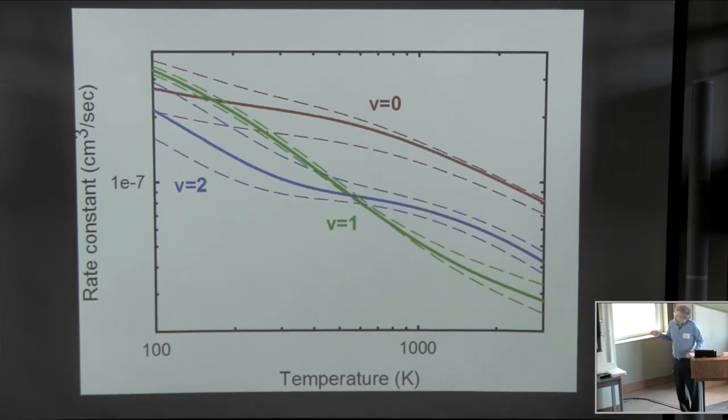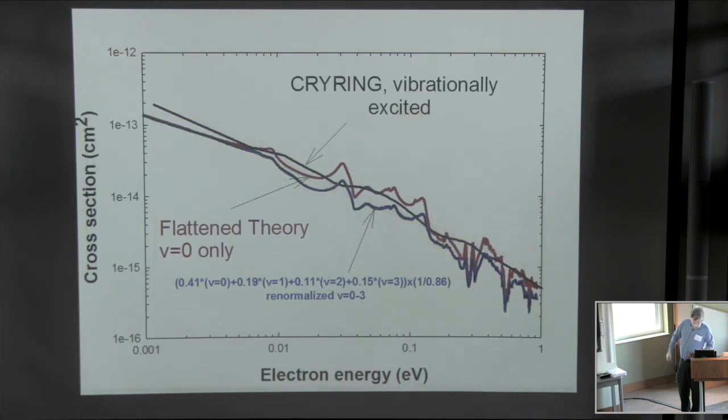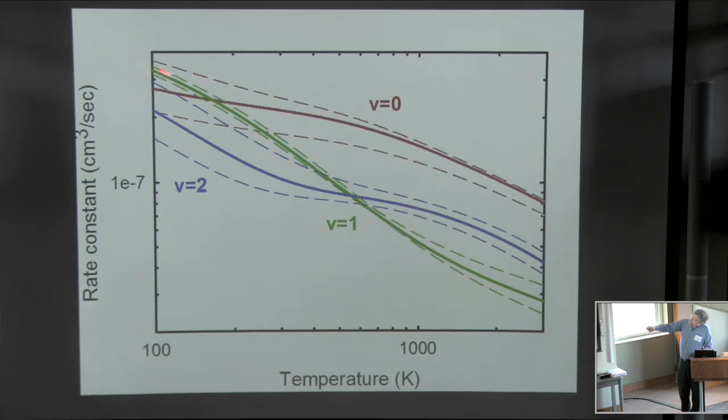These are the rate constants from individual vibrational levels. They're similar at very low temperatures. And I probably should extend these calculations to lower temperatures. Lowest one I have here is 100 K, where it's possible that the v=1 level might exceed the one for v=0. But at room temperature the rates are somewhat similar, but above room temperature the v=0 rate is always greater than the v=2 and the v=1 rates.